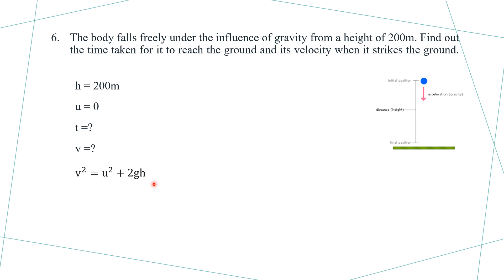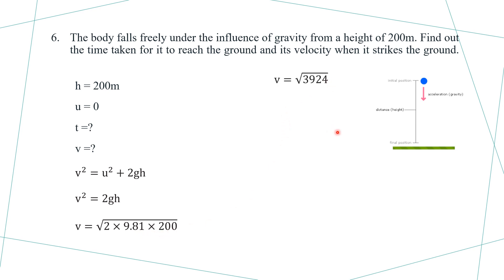The body moves vertically toward the earth under uniformly accelerated motion. Using the equation v squared equals u squared plus 2gh, since u equals 0, v squared equals 2gh. Putting values: v equals under root of 2 into 9.81 into 200, equals under root of 3924, which gives v equals 62.64 meters per second. The final velocity when the body strikes the ground is 62.64 meters per second.